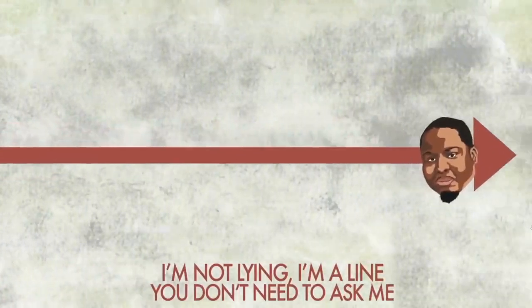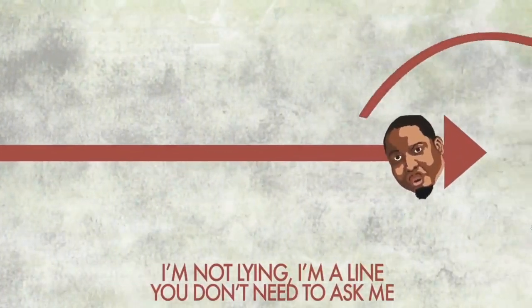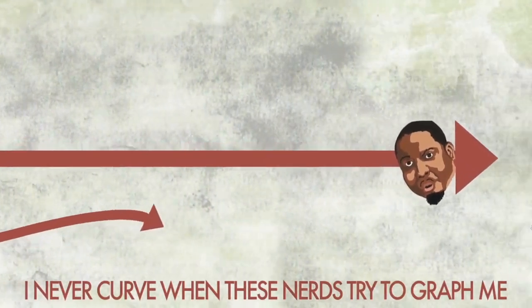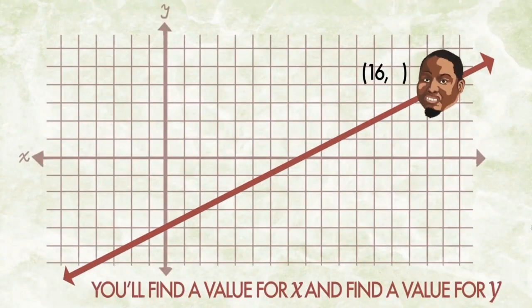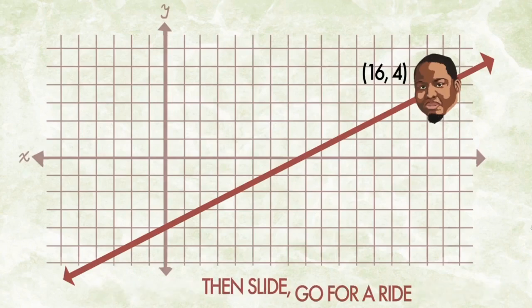I'm not lying, I'm a line. You don't need to ask me, I never curve when these nerves try to graph me. Pick a point anywhere where I lie, you'll find a value for X and find a value for Y. Then slide...